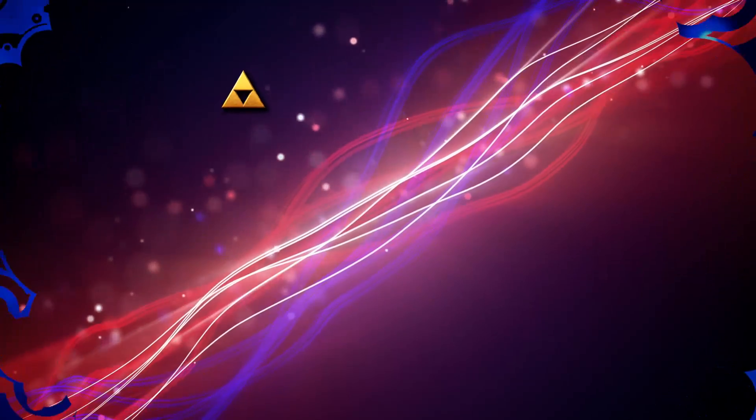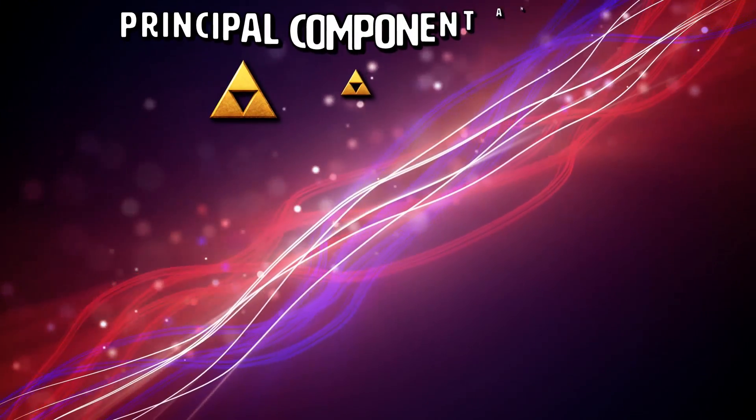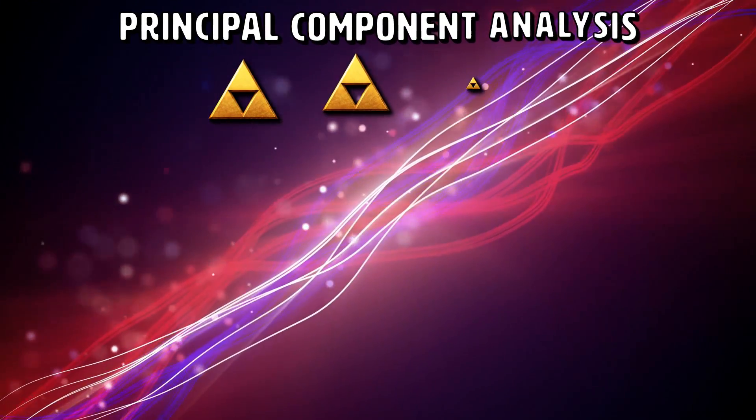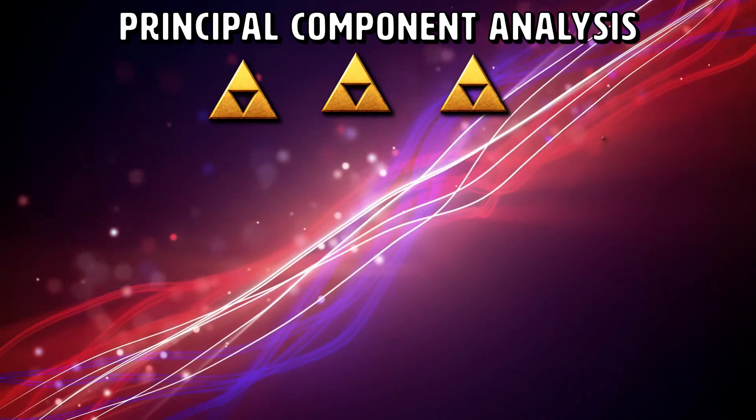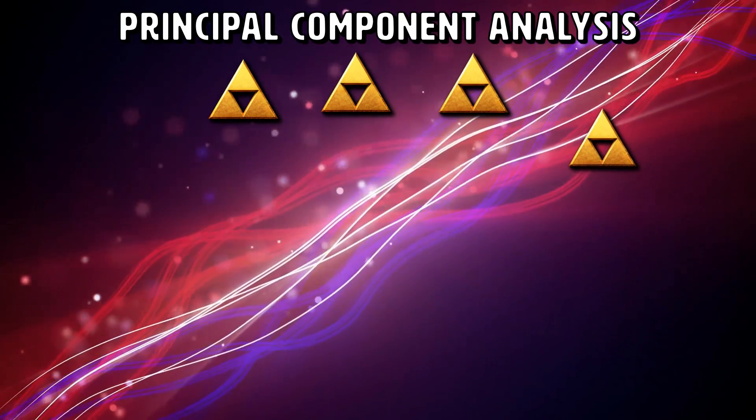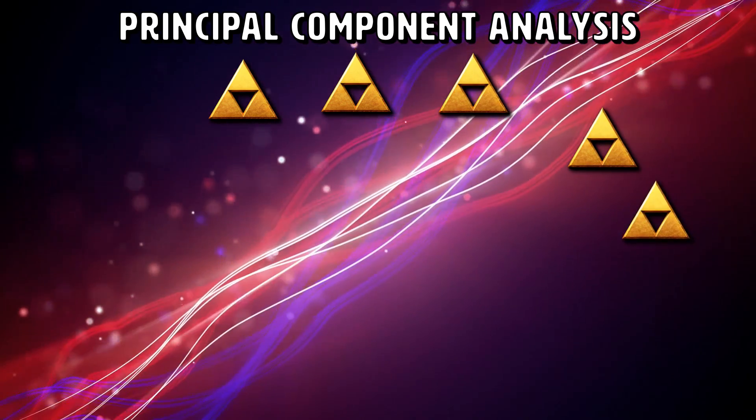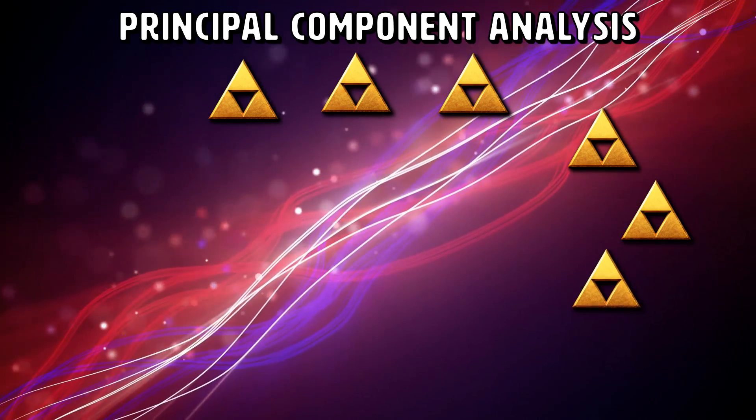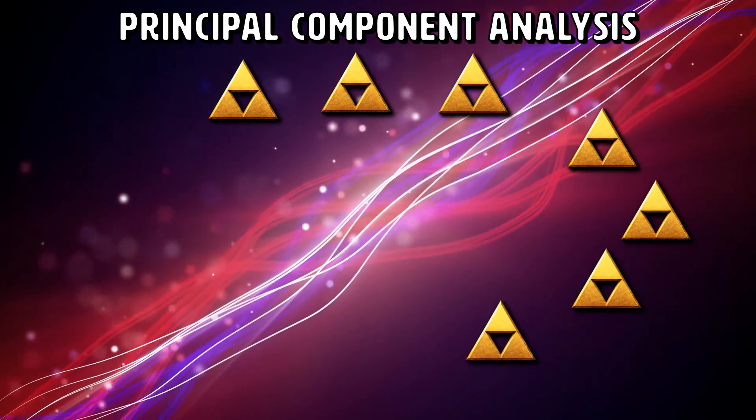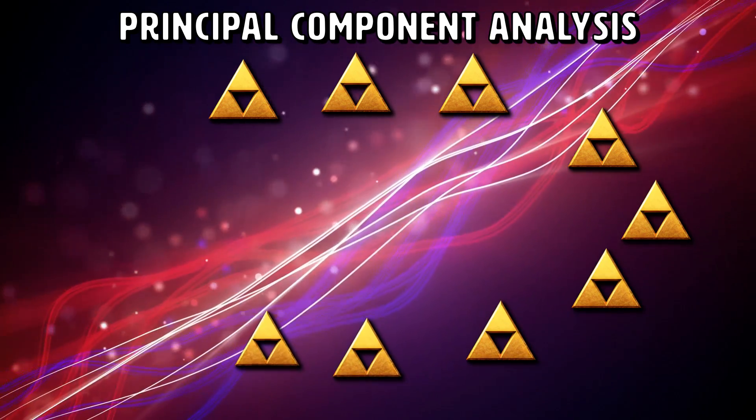PCA finds the principal components of a data set. Principal components are the underlying structure in the data. They are the direction where there is the most variance, meaning where the data is most spread out. It's useful to measure data in terms of principal components, rather than on a normal xy axis.